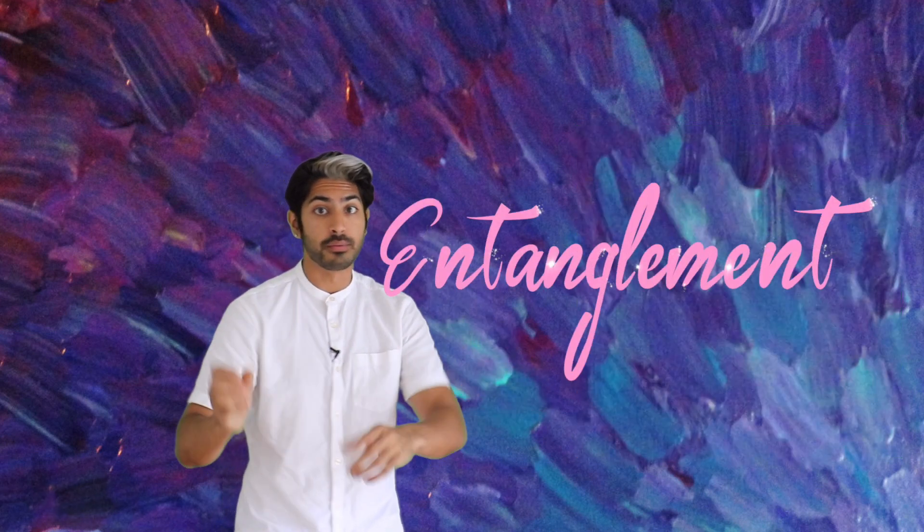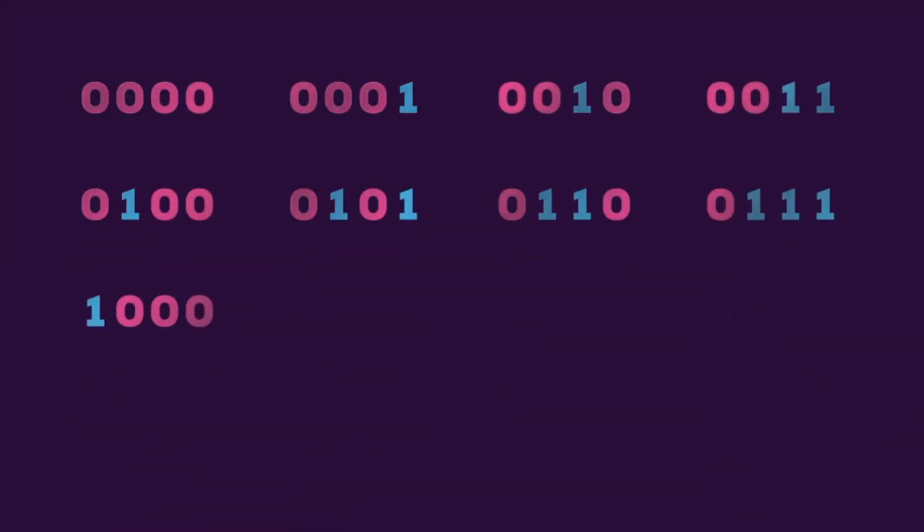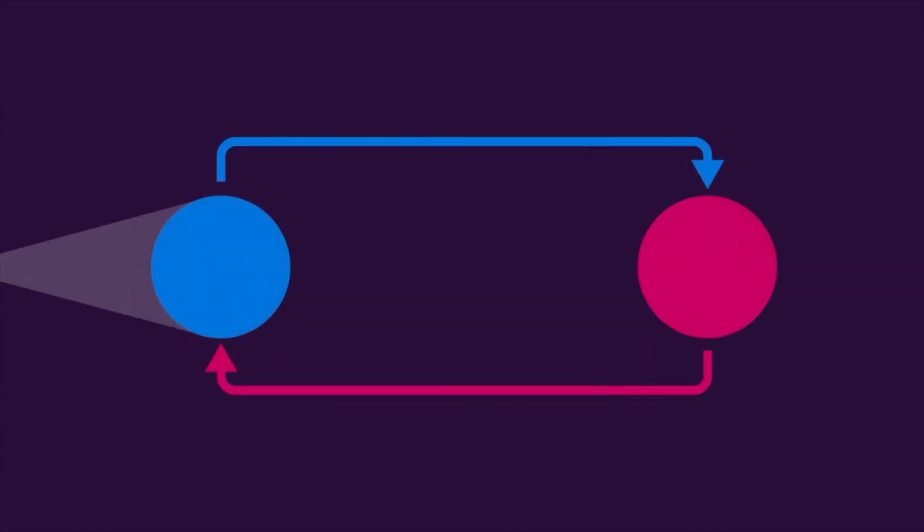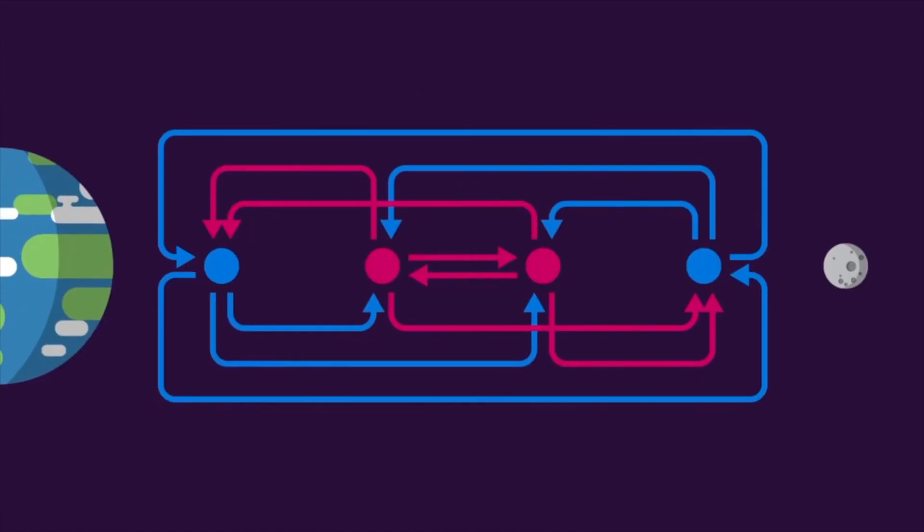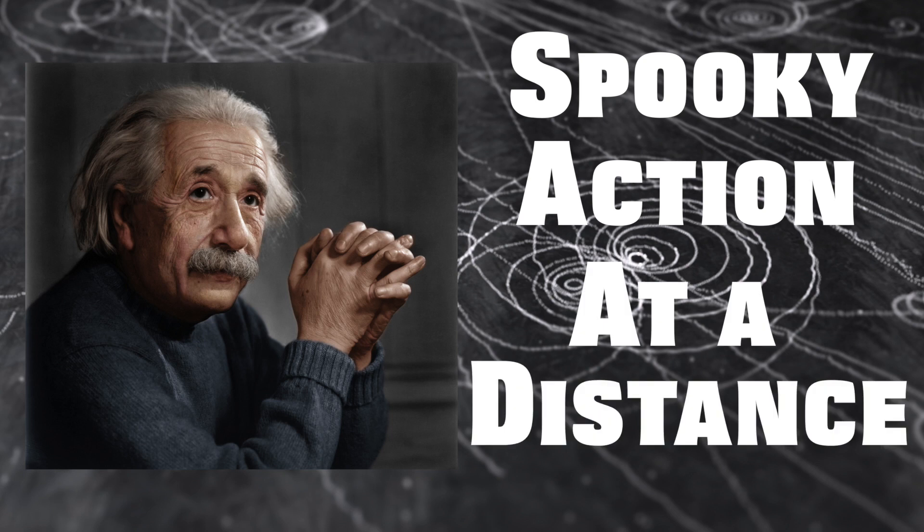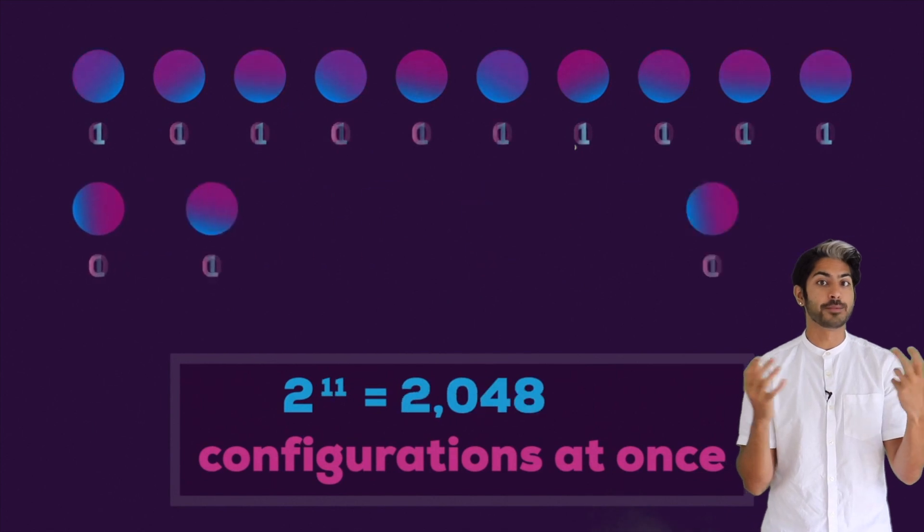If we have a system of more than one qubit, these particles are not independent of each other—they're entangled. So in a system of two qubits, the outcome of one qubit tells you what you will see when you measure the other qubits. Particles can be entangled even if they are separated in space by huge distances. Einstein called entanglement 'spooky action at a distance.'